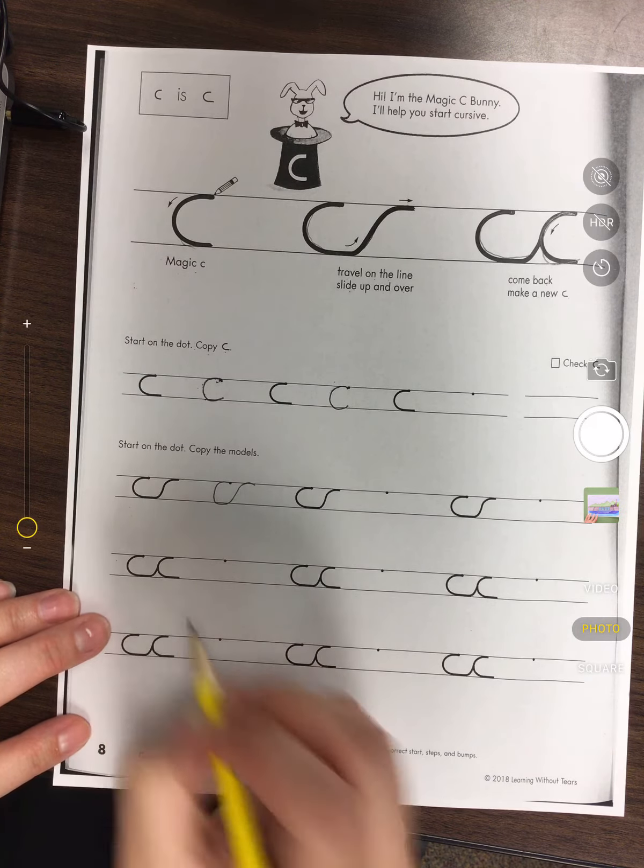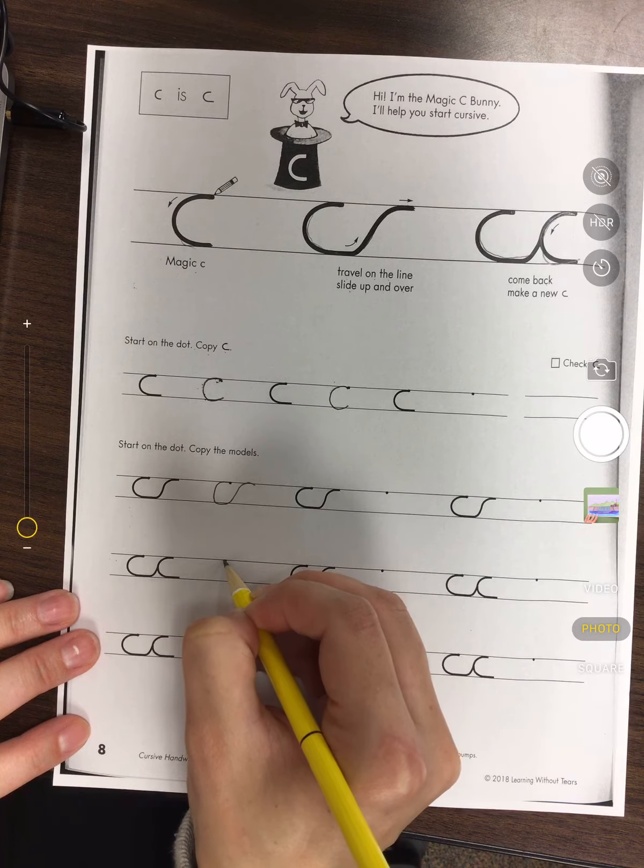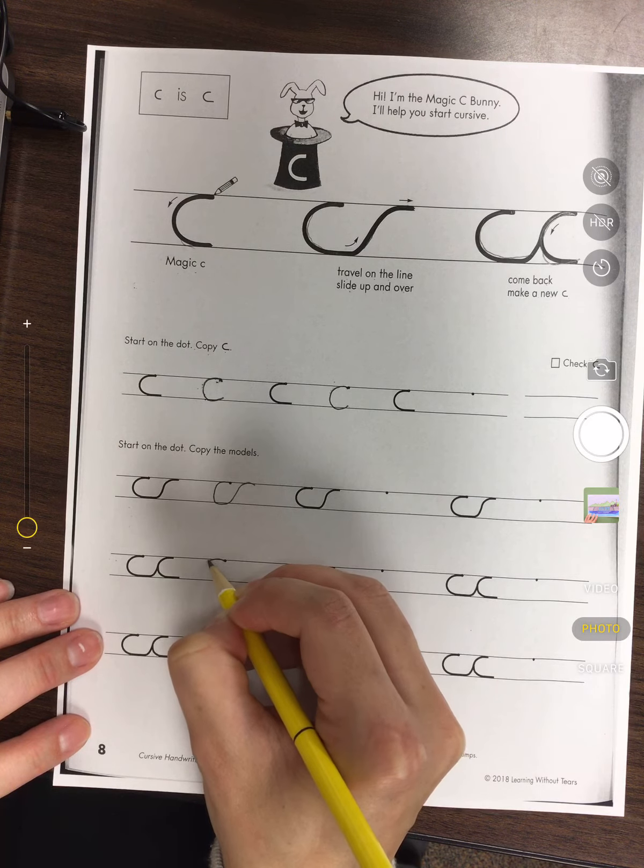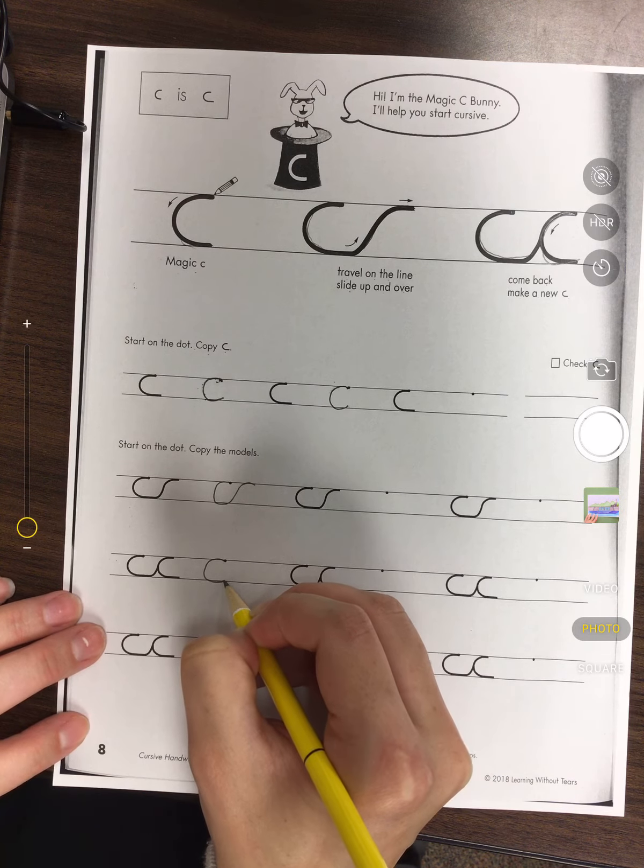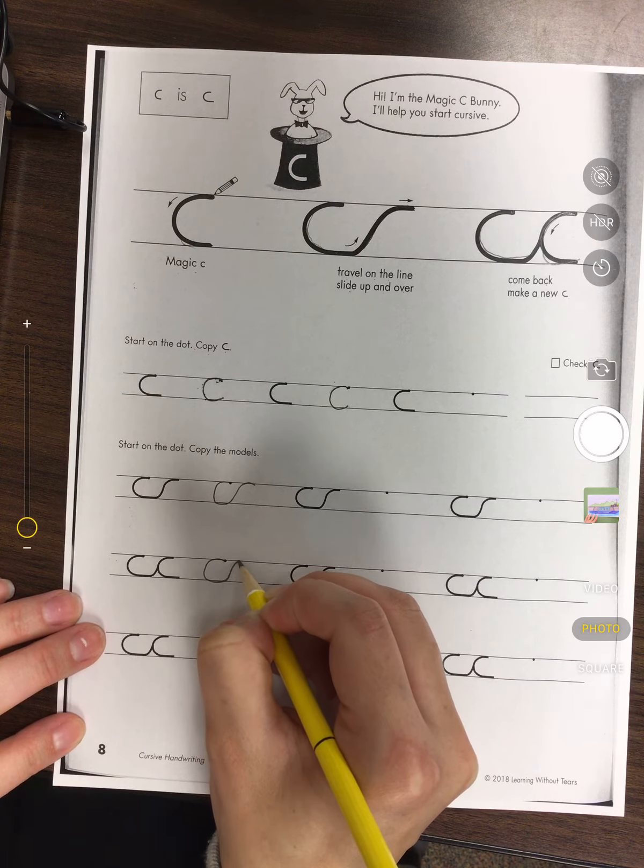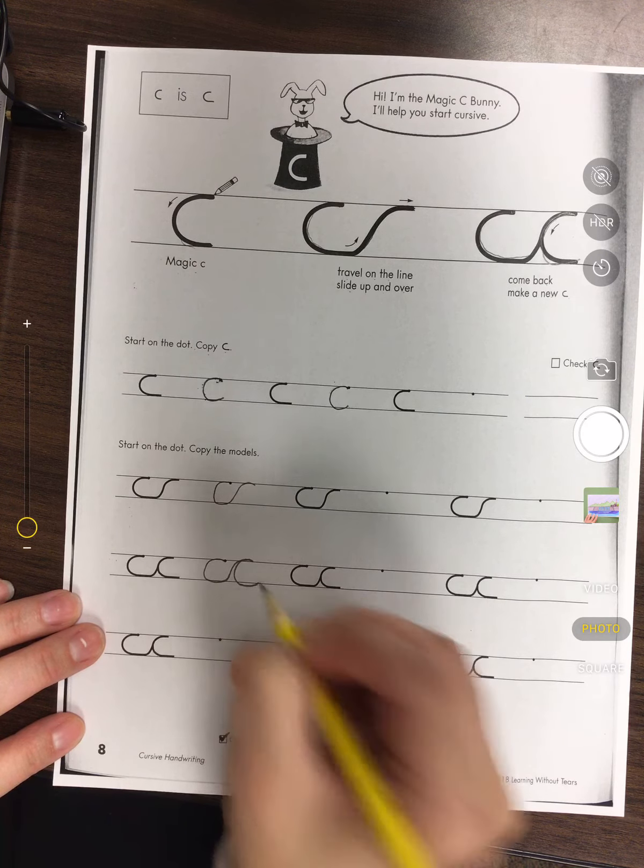All right, now we're going to make two C's. So we're gonna start on our line. We're going to come down and remember we do not pick up our pencil, and we're going to go up and then come back down to make another C.